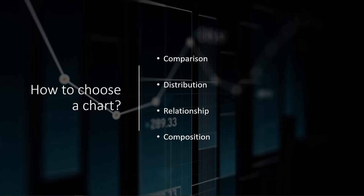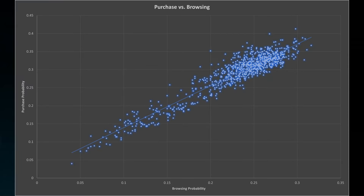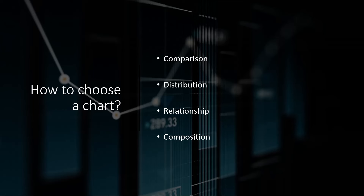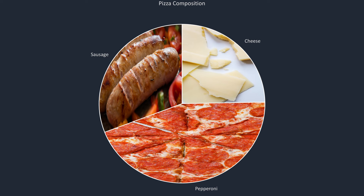Does browsing the web more lead to a higher purchase amount? That's the relationship between two different variables. And fourth is composition. The most straightforward way to think about composition is: let's say you have a pizza — part of it is pepperoni, part of it is cheese, part of it is sausage. Composition would tell you what percentage of the pizza is pepperoni, cheese, or sausage.